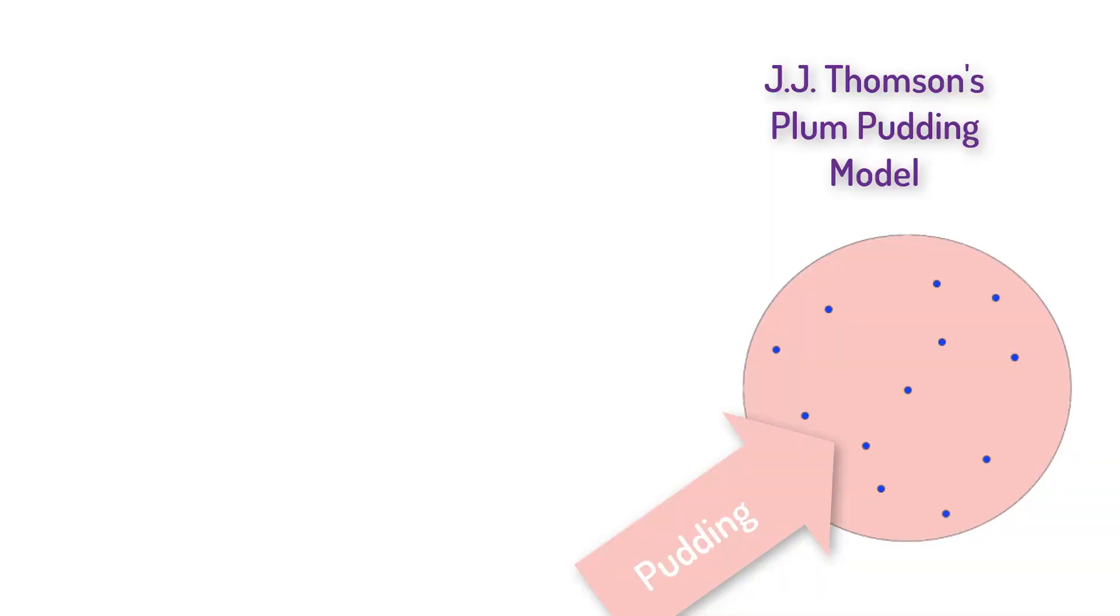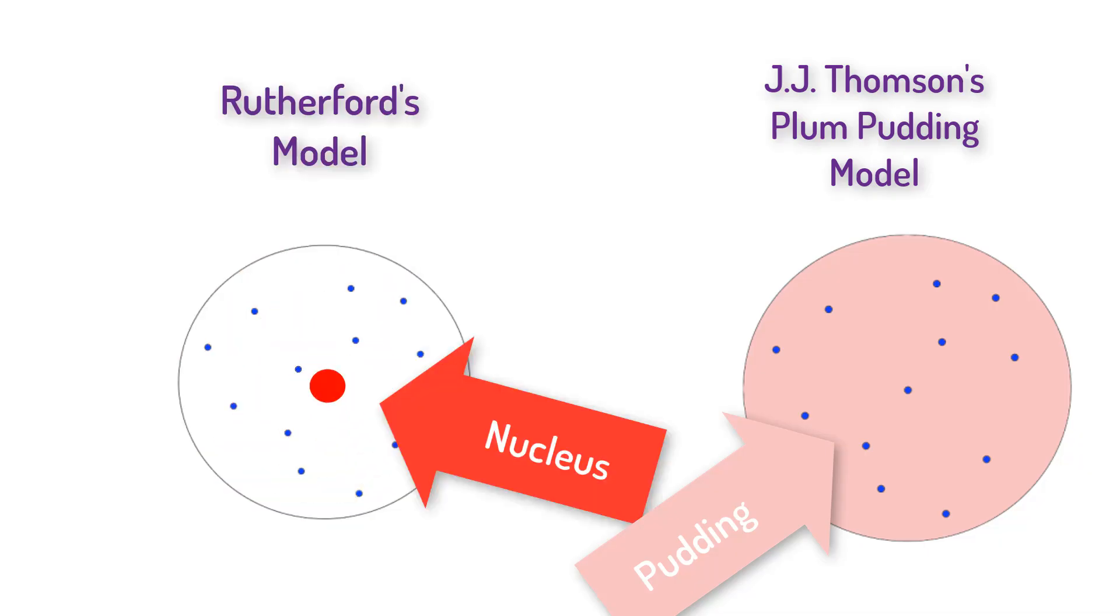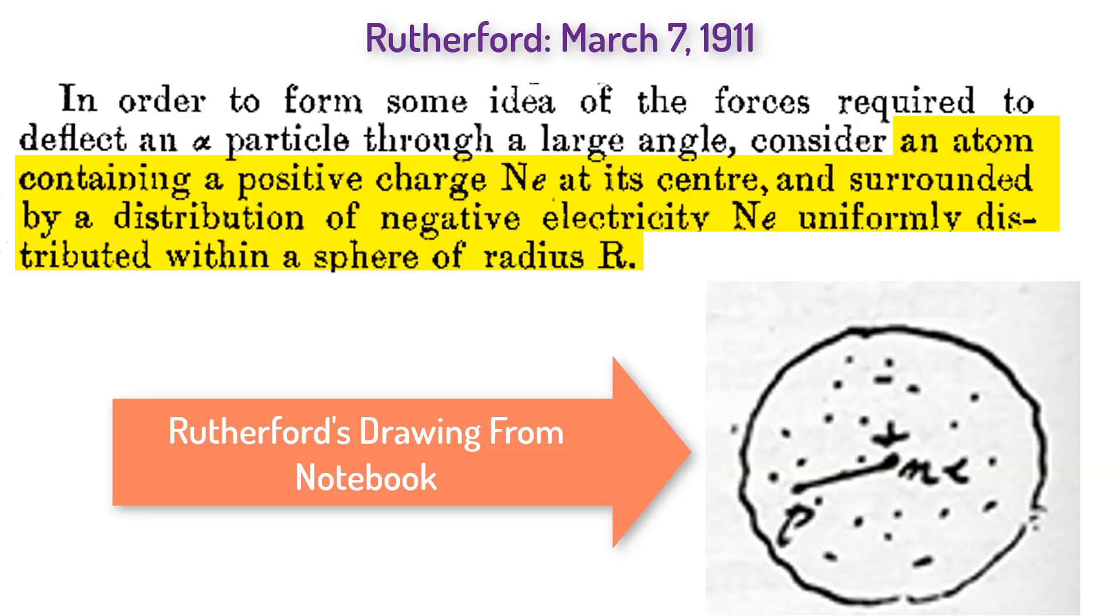Rutherford's logic, according to his own words, was, quote, I realized that the scattering backwards must be the result of a single collision, and when I made calculations, I saw it was impossible to get anything of that order of magnitude unless you took a system in which the greater part of the mass of the atom was concentrated in a minute nucleus. On March 7th, 1911, Rutherford published an article where the atom consisted of, quote, A positive charge Ne at its center, surrounded by a distribution of negative electricity, Ne, uniformly distributed within a sphere of radius r.